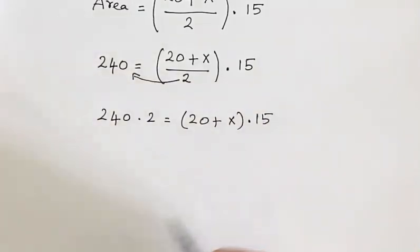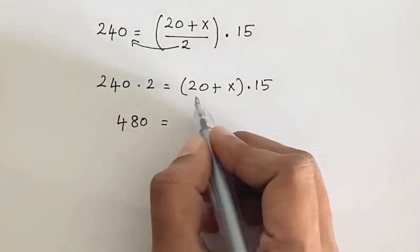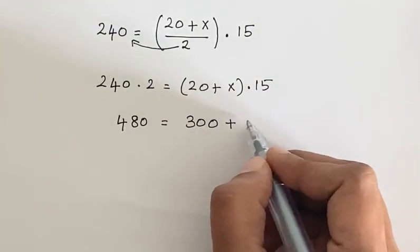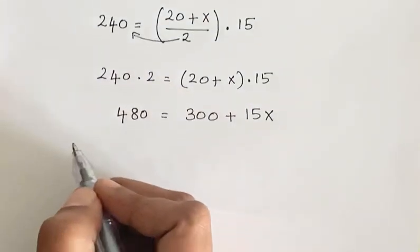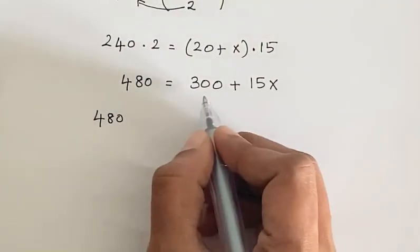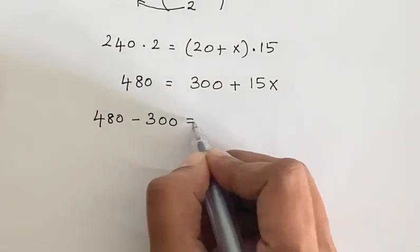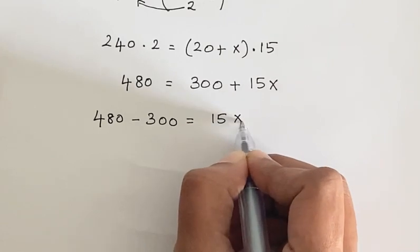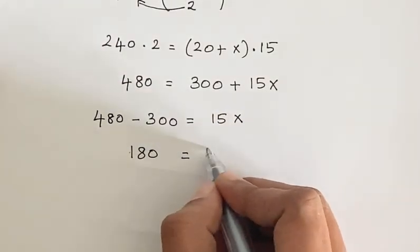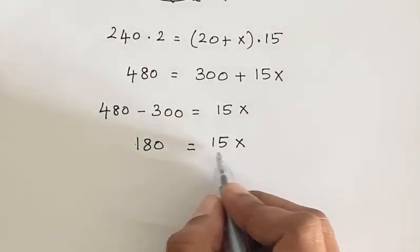So 480 equals 300 plus 15x. Bring 300 to the left hand side, so 480 minus 300 equals 15x. So 480 minus 300 is 180 equals 15x.